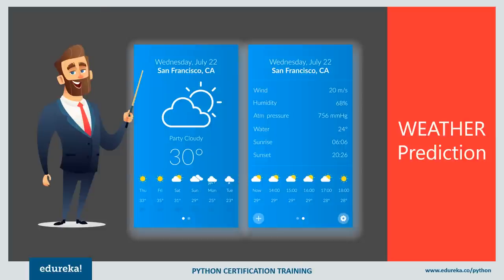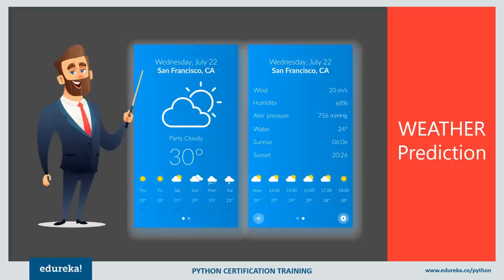Weather is one of the most influential factors in our daily life, and weather prediction has been a challenging problem in the meteorological department for years. Even with technological and scientific advancement, accuracy in weather prediction has never been sufficient. A Naive Bayes approach creates a model where posterior probabilities are used to calculate the likelihood of each class label for an input data instance, and the one with maximum likelihood is the resulting output — similar to the small play/no-play implementation we saw earlier.